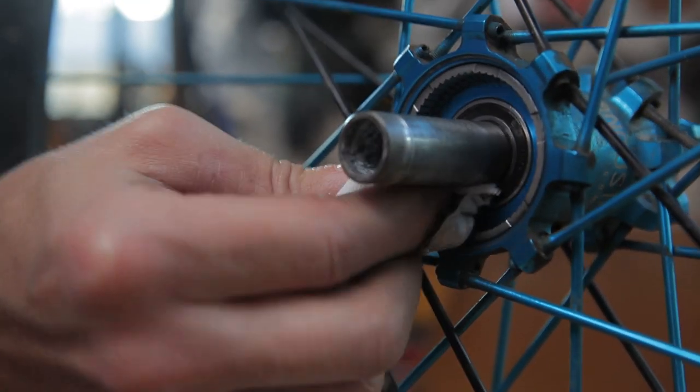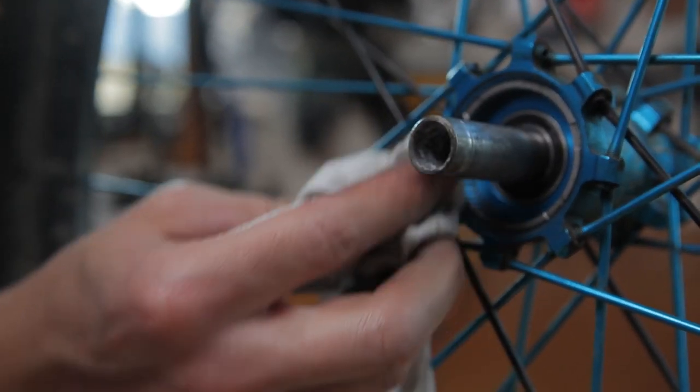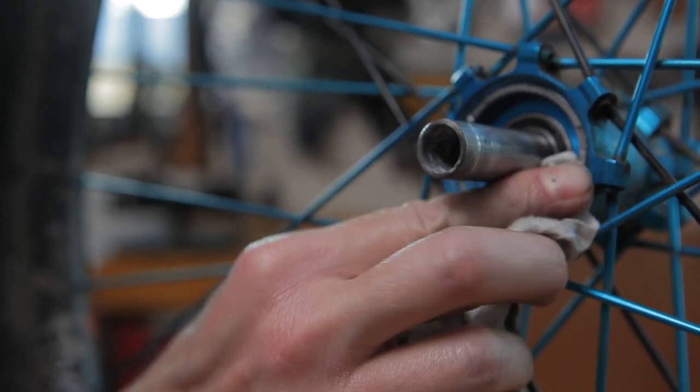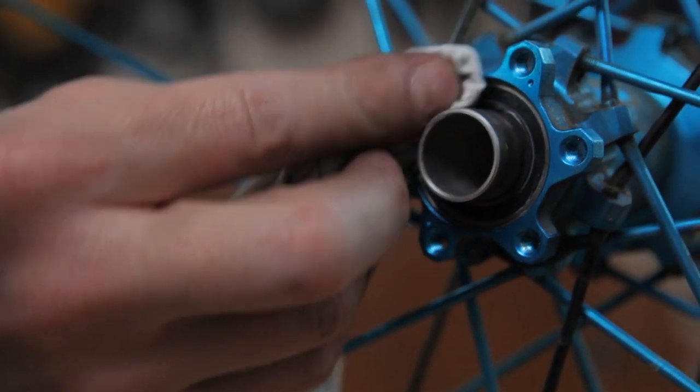Once the freehub is removed, clean and inspect the drive ring. Look for any signs of potential damage or wear on the drive ring.